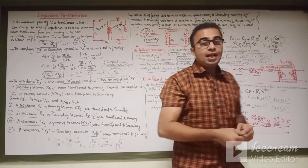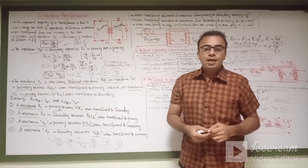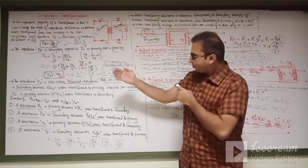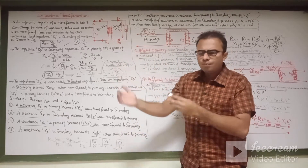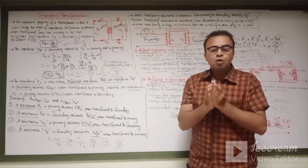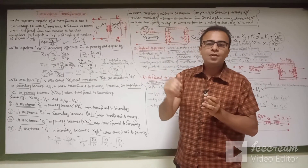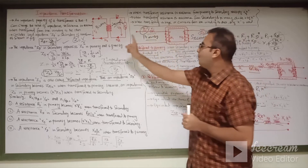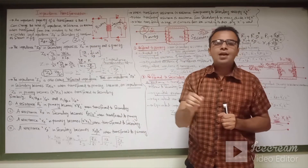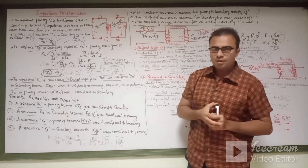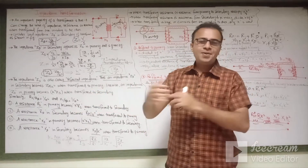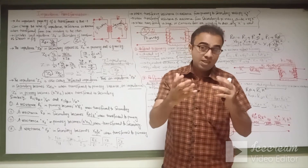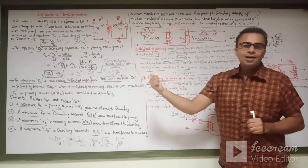This was the complete lecture regarding impedance transformation in the transformer. To recap: when transferring reactance or resistance from primary to secondary, multiply by K²; when transferring from secondary to primary, divide by K². I hope you have understood today's lecture. Please subscribe to my YouTube channel Shoaib Madhav for more informative videos related to electrical engineering. Thank you.